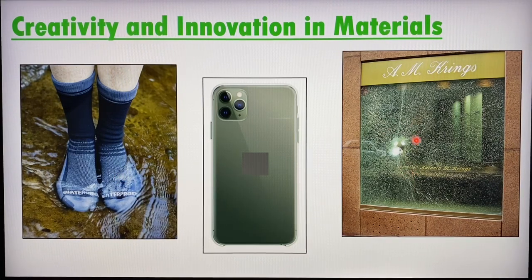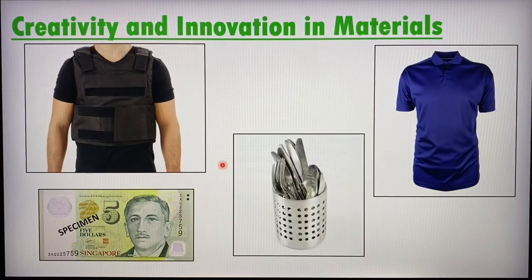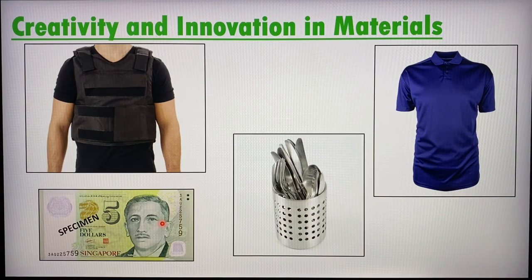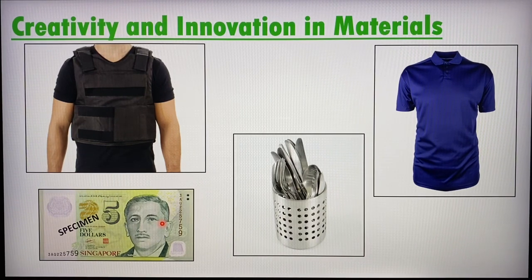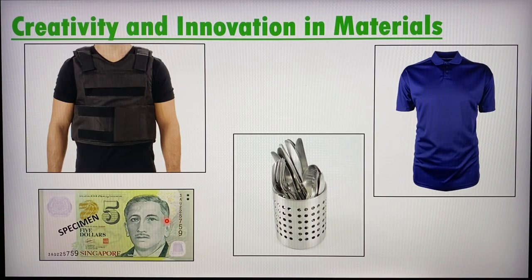We also have bulletproof glass, which is very important in protecting property and people from bullets or attacks. Other innovations include body armor like Kevlar, and even our Singapore local notes — if you look and feel them carefully, they are made of a combination of paper and plastic, making them very durable and waterproof. If they were purely paper, the notes could tear or break easily and you would not be able to use your money anymore.